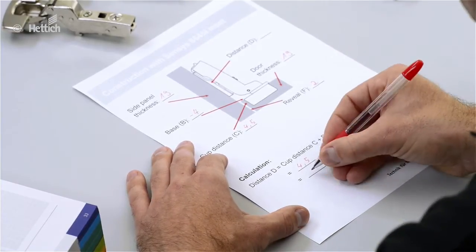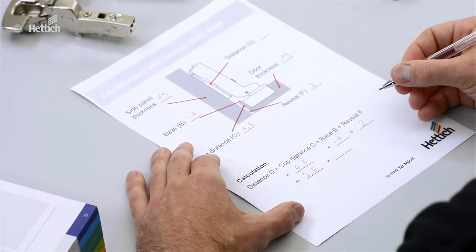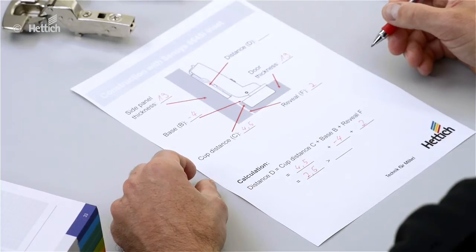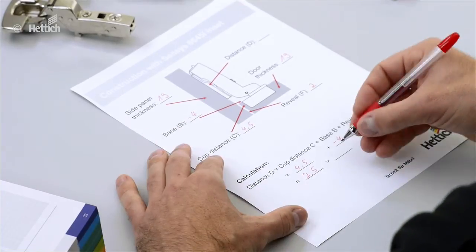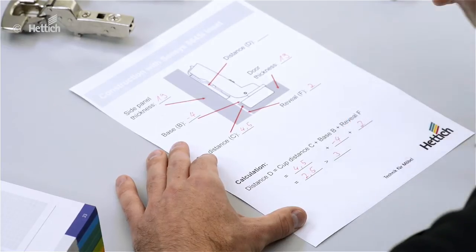So we get a value of 2.5 millimeters, but this mounting plate distance doesn't exist, so we choose the next biggest diameter size which is 3 millimeters.